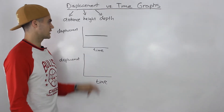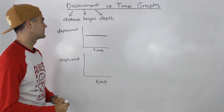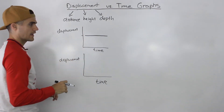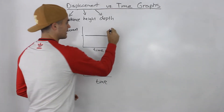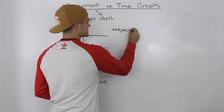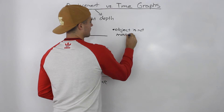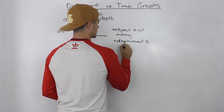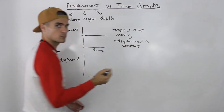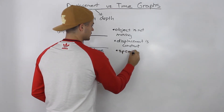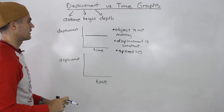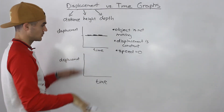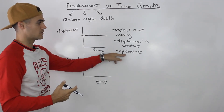What if you get a graph that is just a straight horizontal line? Notice the displacement is constant — it's neither increasing nor decreasing. Intuitively, when the displacement is constant, that means the object is not moving. The displacement is constant and the speed equals zero, or the rate of change of displacement is zero. If you draw tangents on this, they're all going to be horizontal lines. The slope of a horizontal line is zero, so slope of the tangent being zero means the speed is zero.